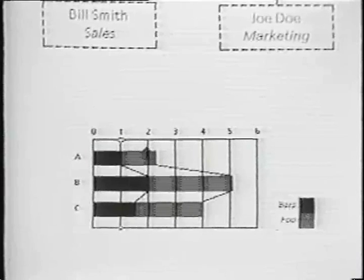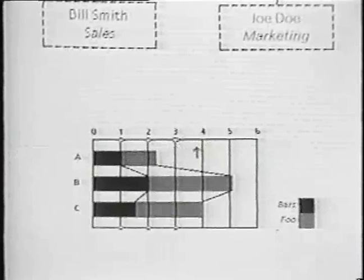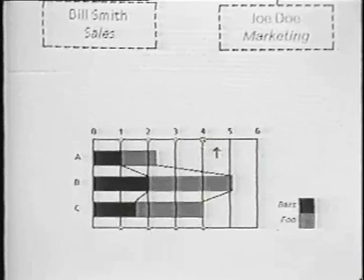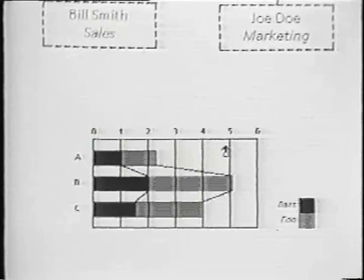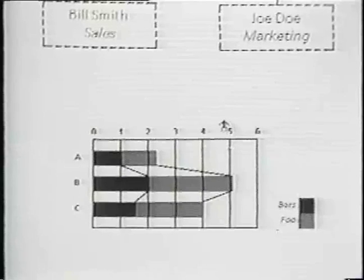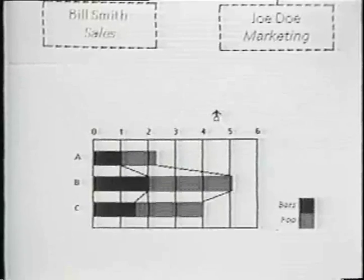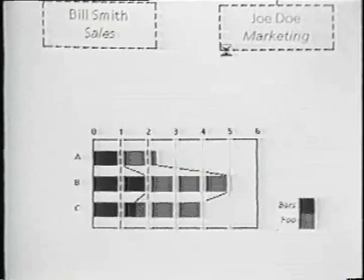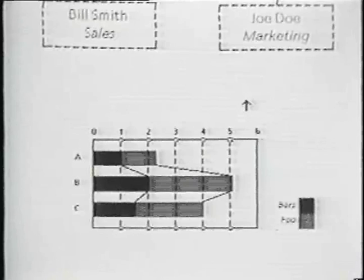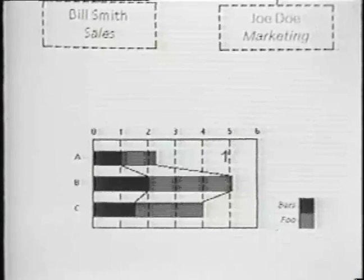Here I am changing the line style of the split bar chart by invoking the operation called Same. This operation is used to copy properties from another object by pointing at an object that has the properties that you want. When I am done, I then gather the pieces of the bar chart together by invoking the join command.